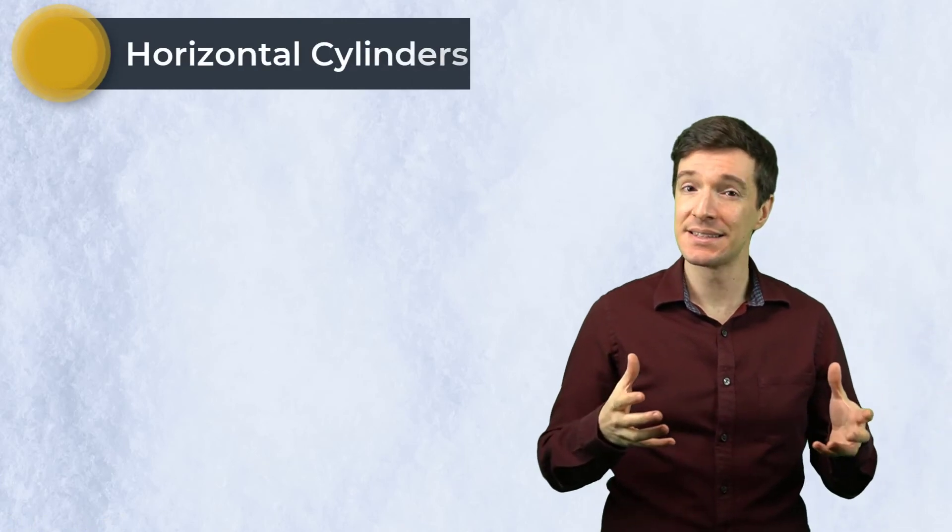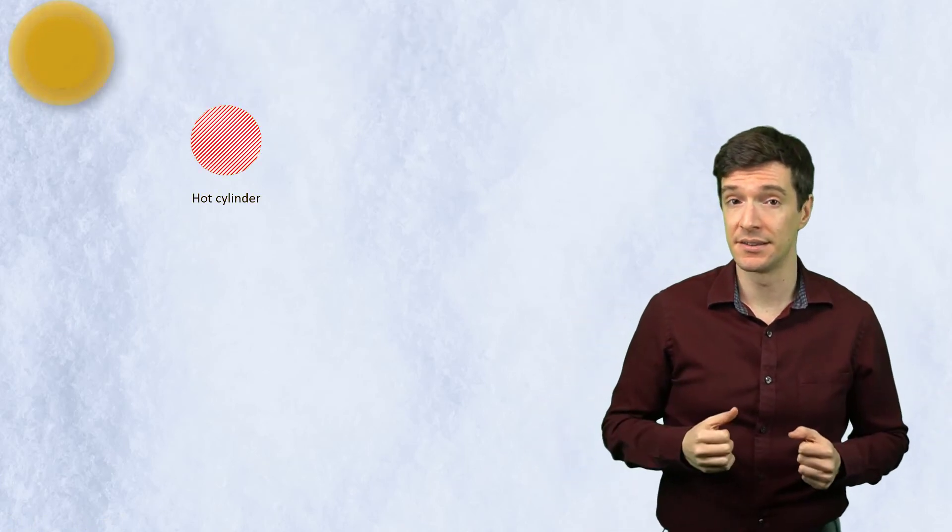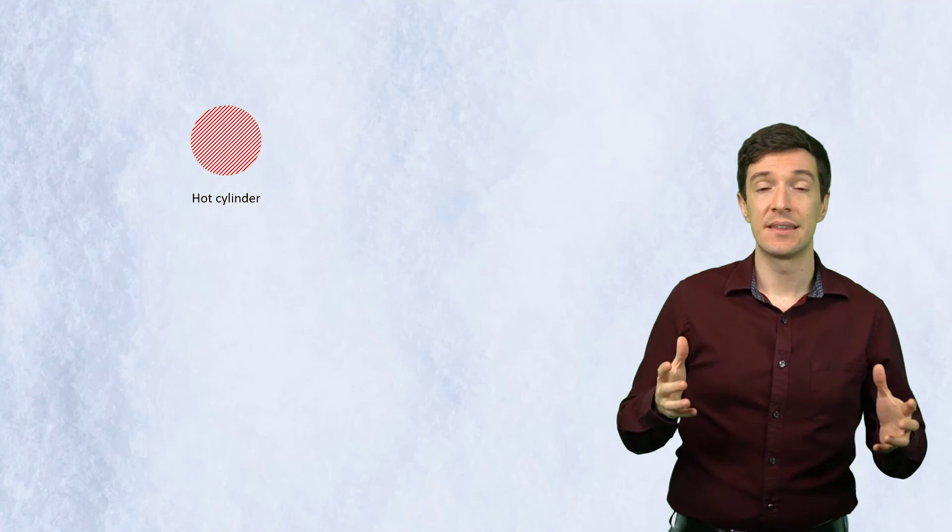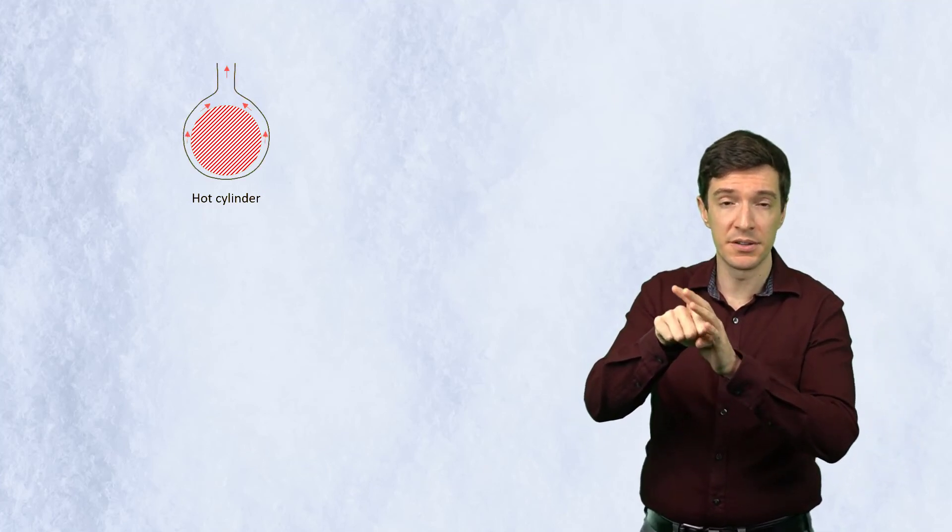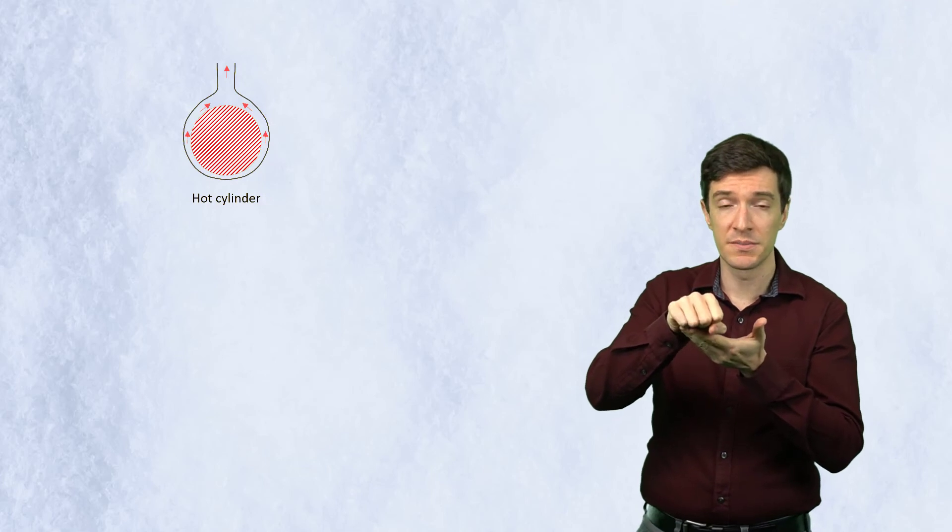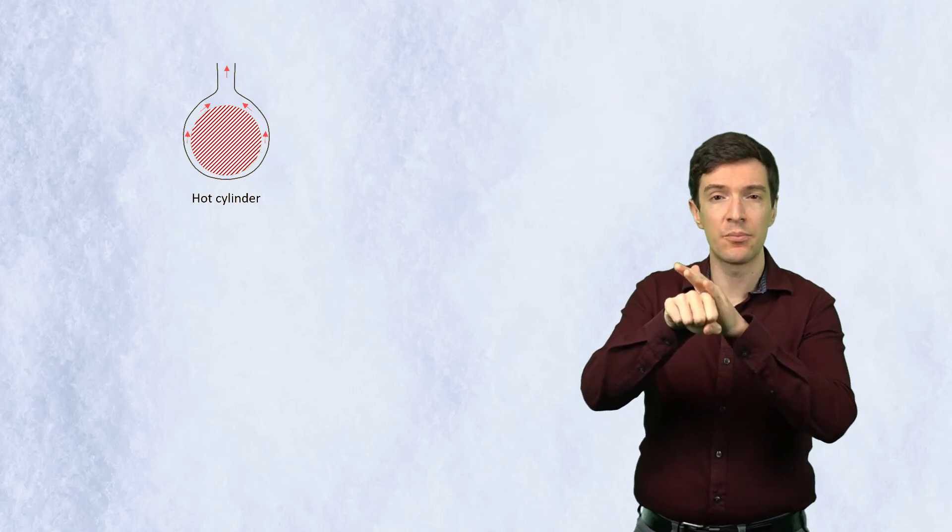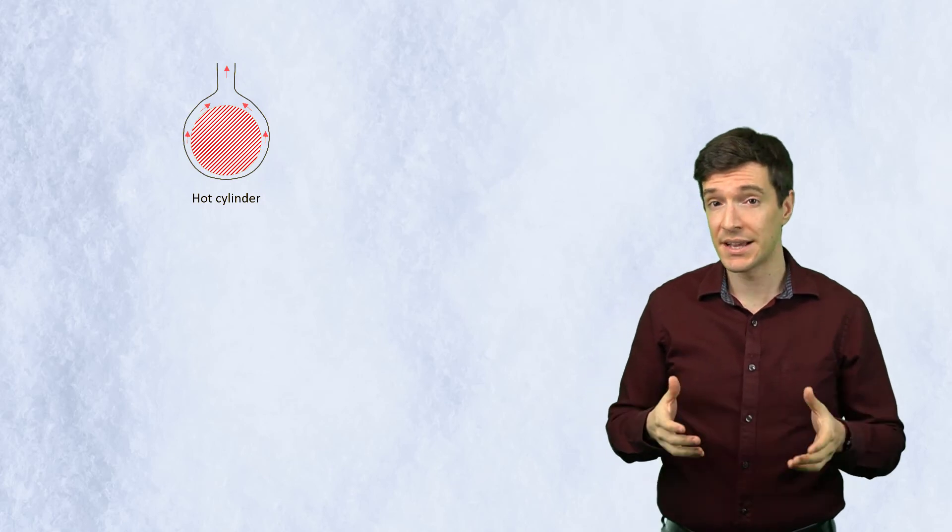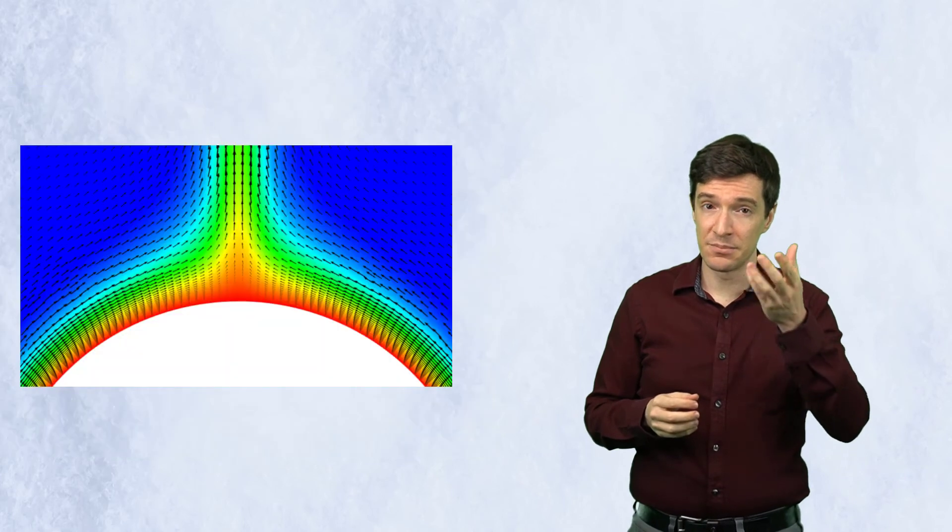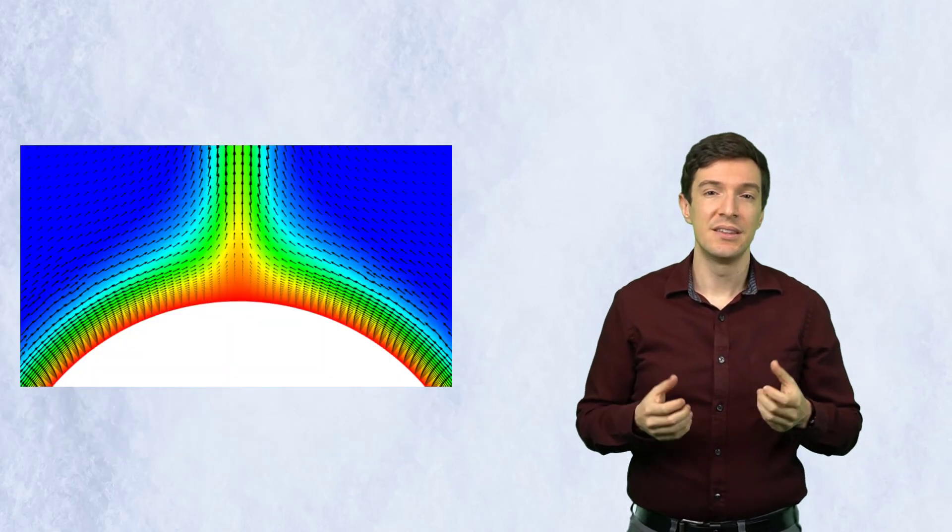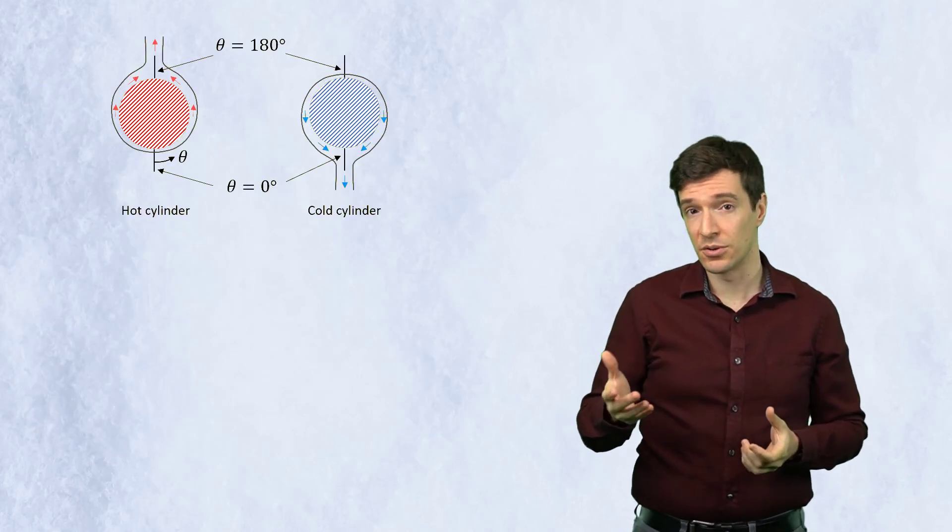Let's move now to study cylinders. If we analyze a section of a hot cylinder, we can see that the fluid will form a boundary layer around the body, starting from the bottom side and then moving upward around it. Near the top of the section, the fluid separates into an ascending plume. The opposite can be seen for a cold cylinder.